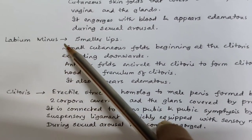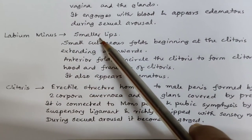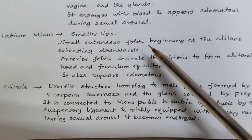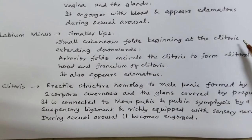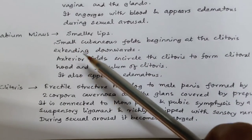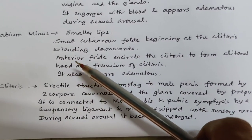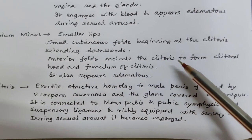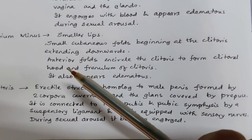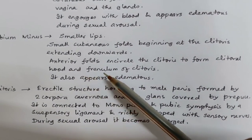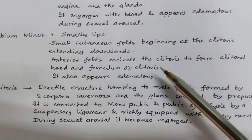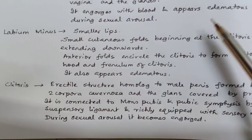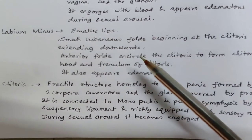Labia minora are the smaller lips — small cutaneous folds beginning at the clitoris and extending downwards. The anterior folds encircle the clitoris to form the clitoral hood and frenulum of the clitoris. Labia minora also appears edematous during sexual arousal.